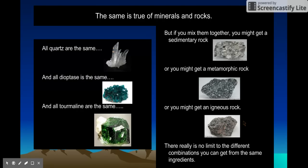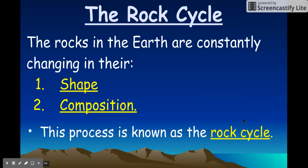The rock cycle is the process by which rocks change in their shape and their composition — composition just means what they're made of. On Earth the rock cycle is constant; it's very gradual and often very subtle, but it never stops. Rocks are always changing what they're made of and what they look like — that's the rock cycle.